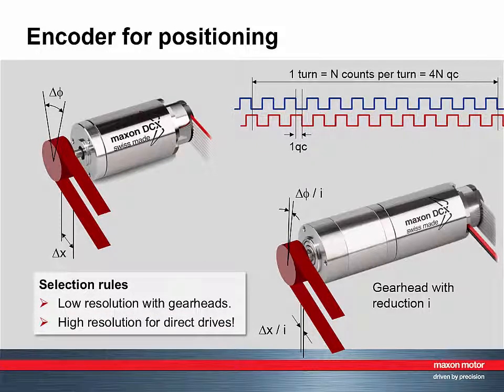On the other hand, high resolution encoders of more than 1000 counts per turn are often used on direct drives. In the following, we focus on motors alone, assuming that the required resolution has been calculated back to the motor shaft level.